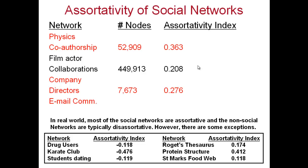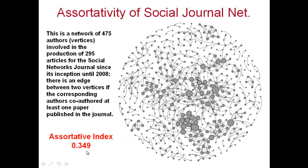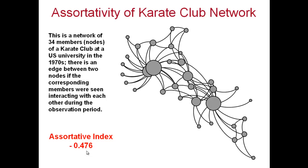In an email communication network of directors in a company, directors on the boards of several companies will have communication with directors who are also on the boards of several companies. Typically, social networks are expected to be assortative in nature, whereas non-social networks like biological networks are expected to be disassortative. There are some interesting exceptions in the literature. One case is the Karate club network — a real-world network from a US university in the 1970s where 34 students were members.